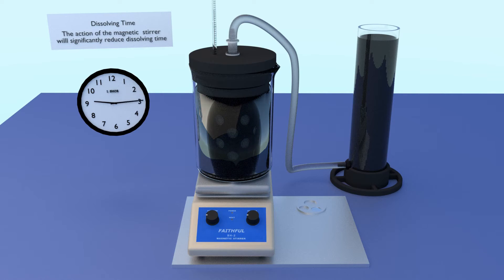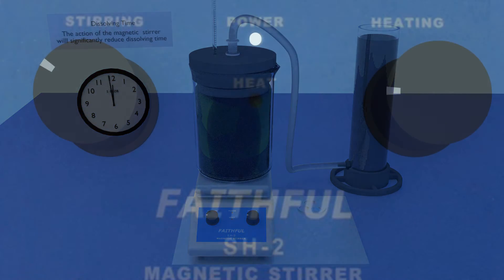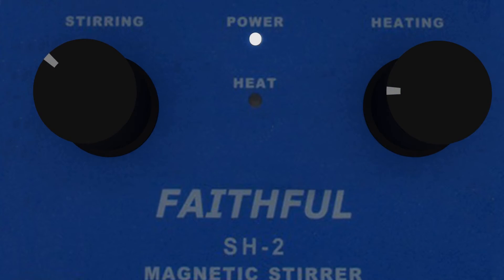However, this time can vary considerably depending upon such factors as silver and platinum group content, as well as surface area. Silver and platinum group metals will slow the dissolving process. High surface area will speed the dissolving process. Using the heater and or the magnetic stirrer can greatly speed the dissolving process.